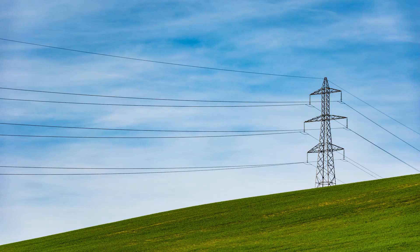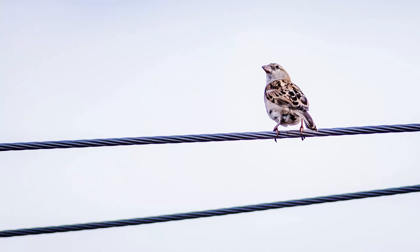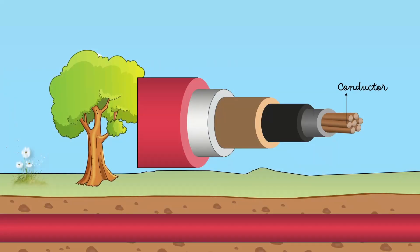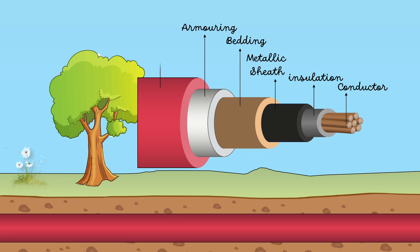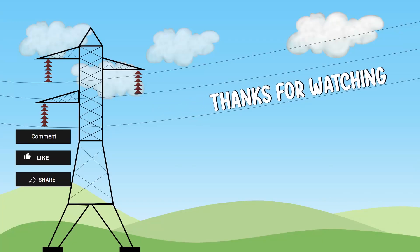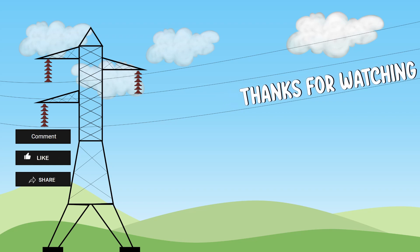In overhead transmission lines, just bare conductors are used. While underground transmission has conductors, insulation, metallic sheath, bedding, armoring, and serving. Now it's very obvious why the underground transmission system is expensive. That's all for today. Bye, see you in my next video.